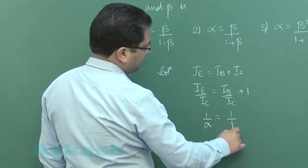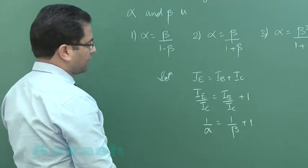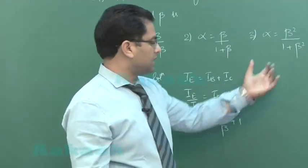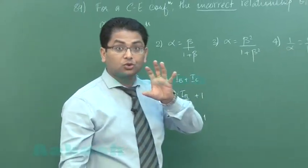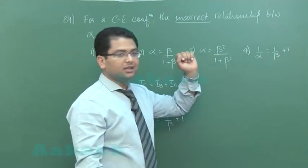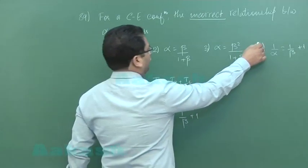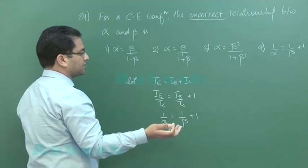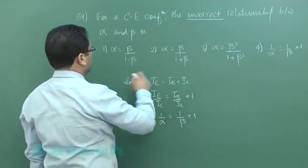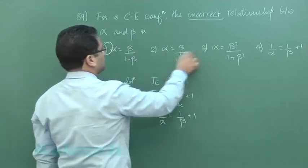This will be 1/α = IB/IC + 1. That's the definition of alpha: IC/IE. That's the definition of beta. From here you can see the fourth option is matching, but we're not allowed to choose it because we have to choose the incorrect option.